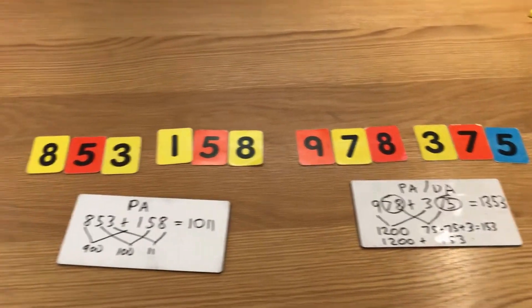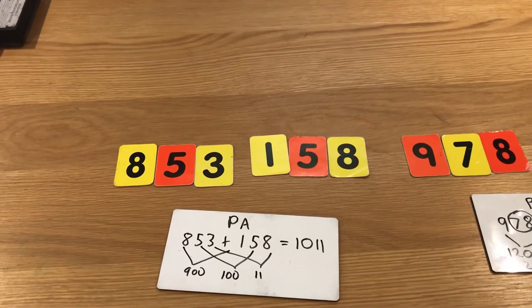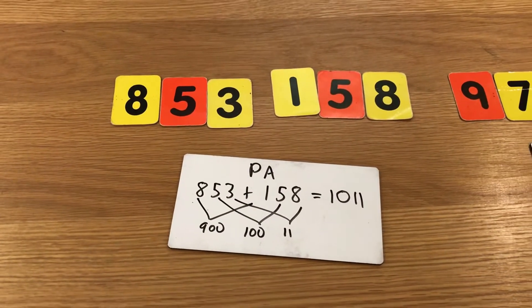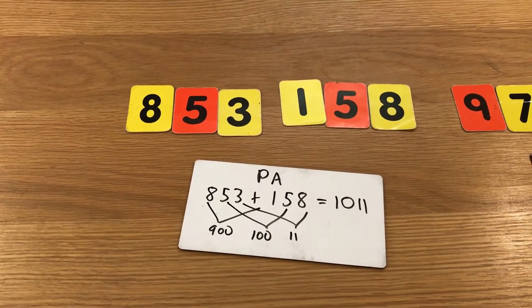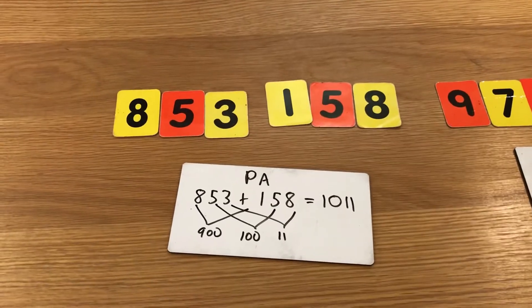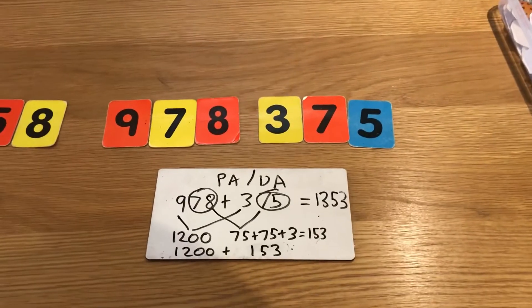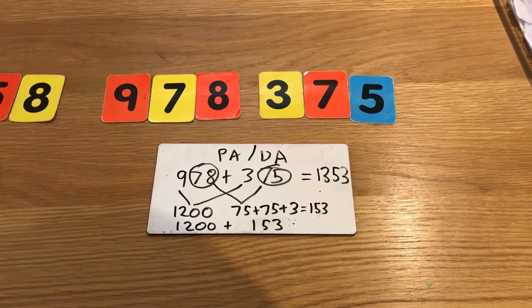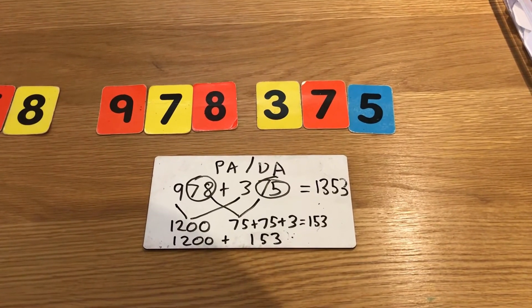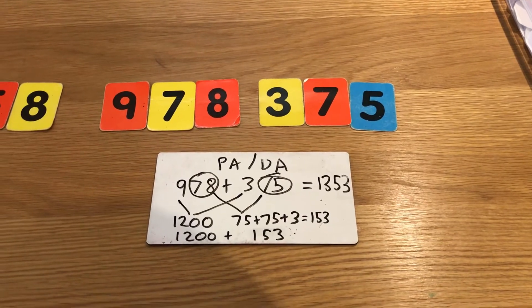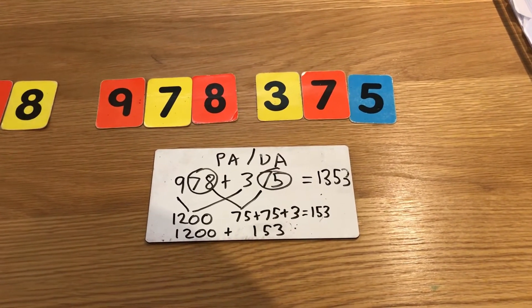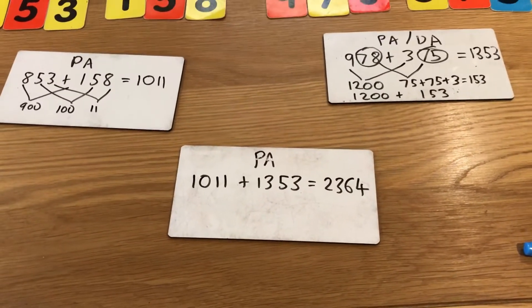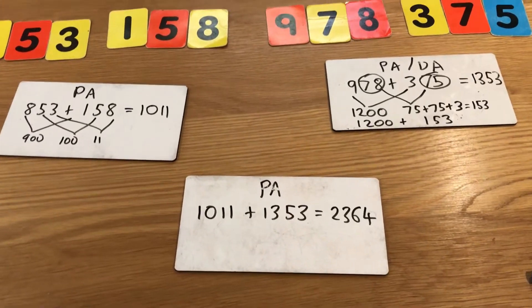This was probably one of the trickier examples. Looking at 853 and 158, the main number bond I could spot was 900 and 100 to make 1000, but on this example I spotted the 250s making 100: 800 and 100 is 900, 50 and 50 is 100, plus the final 11 gives 1011. For the other pair, I combined two strategies: partition the hundreds — 900 and 300 is 1200. Then 78 and 75: double and adjust — double 75 is 150, add 3, giving 1353.